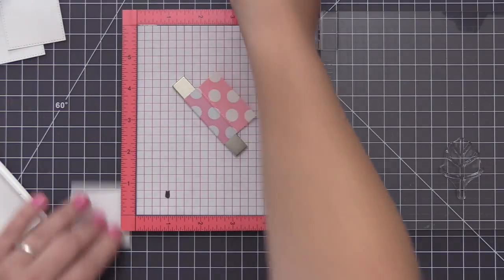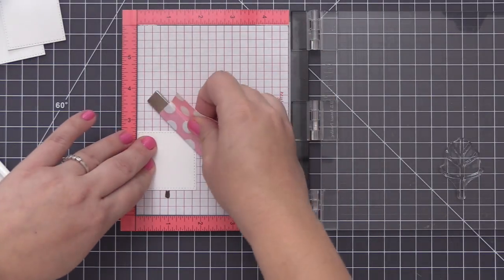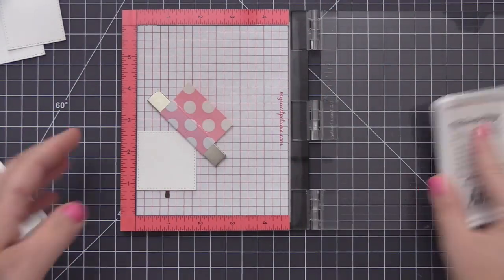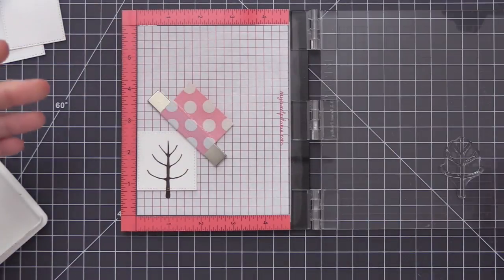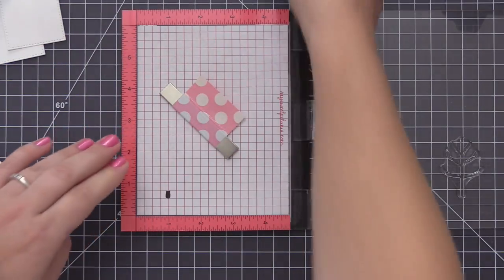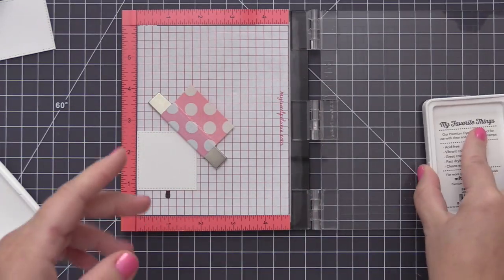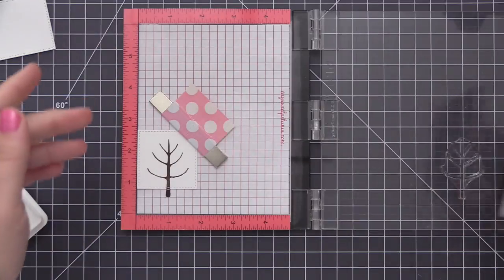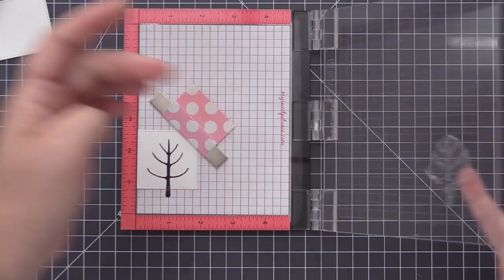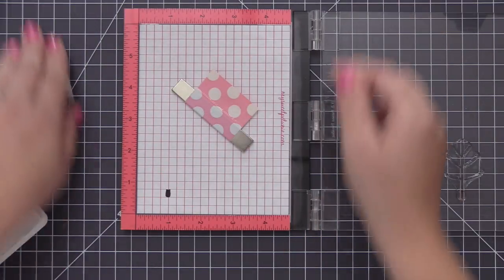I am stamping that tree trunk using hot fudge dye ink directly onto that square and then once I have it stamped I'm removing it and putting one of the next squares in there and doing the exact same thing. I'm going to repeat this process for all four of the squares and this is going to ensure that my tree trunks are lined up in exactly the same spot on all four of them.